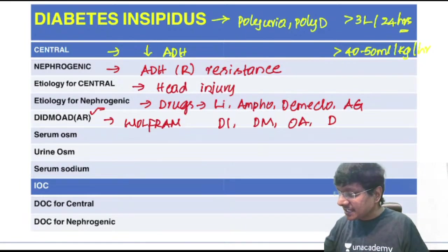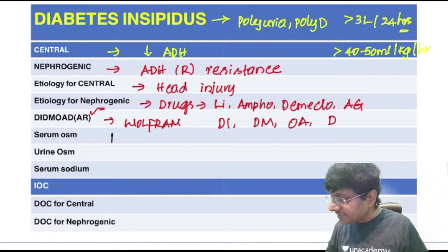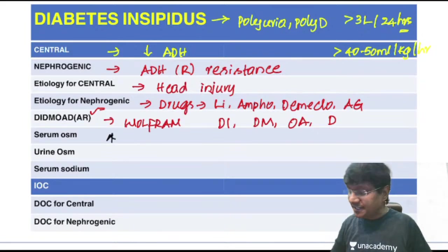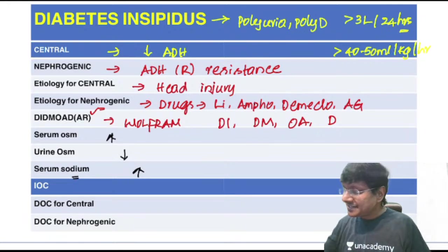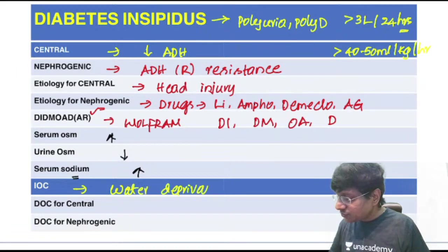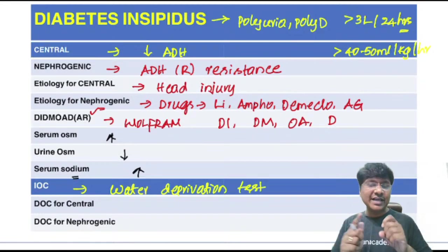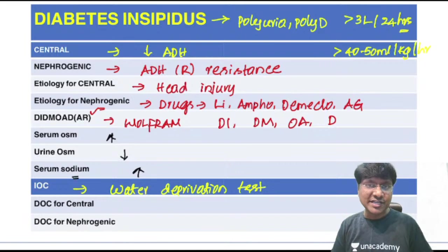In investigations: serum osmolality increases in diabetes insipidus, urine osmolality decreases because of polyuria, and serum sodium is elevated. The investigation of choice is the water deprivation test, which differentiates central from nephrogenic diabetes insipidus and also differentiates it from psychogenic polydipsia.